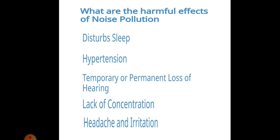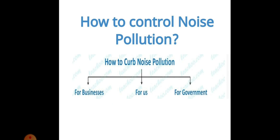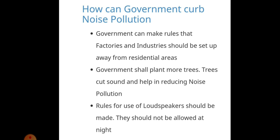These are the harmful effects of noise pollution. How can we control noise pollution? We can control the sources of noise pollution. There are different steps taken by the government, businesses, and by us. The government can make rules that factories and industries should be set up away from residential areas — this results in less noise pollution. The government shall also plant more trees, as trees help in reducing noise pollution.